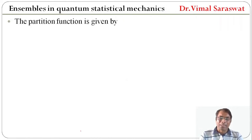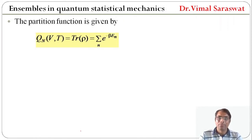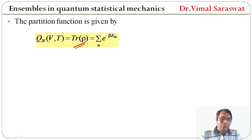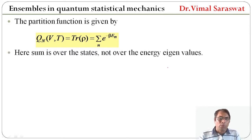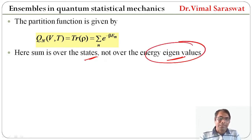The partition function Q_N is given by Q_N equal to trace of rho, which equals sigma_n e^(minus beta E_n), where beta equals 1 over kT. Here the sum is over the states, not over the energy eigenvalues. So the sum is over the states; it is not over the energy eigenvalues.